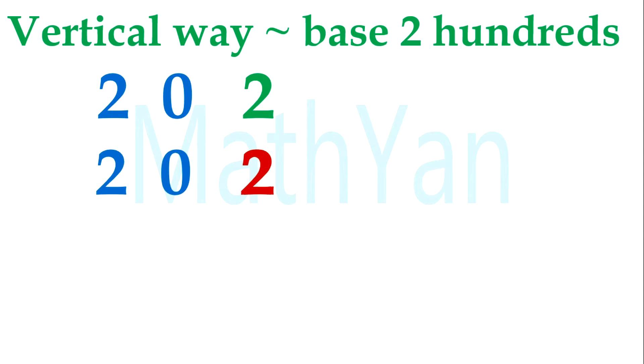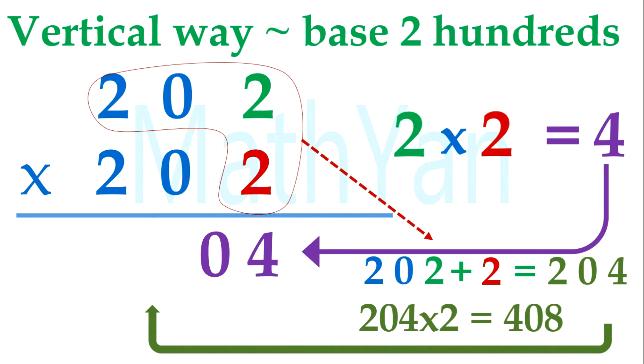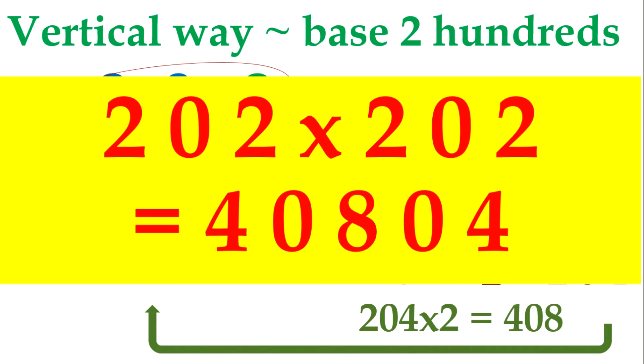Number of base 200, so it's just the same. 2 times 2 is still 4. So the 2 plus 2 is 4. 4 times 2 is 8, so it's 0408. So the answer is 40804. 202 times 202 is 040804.